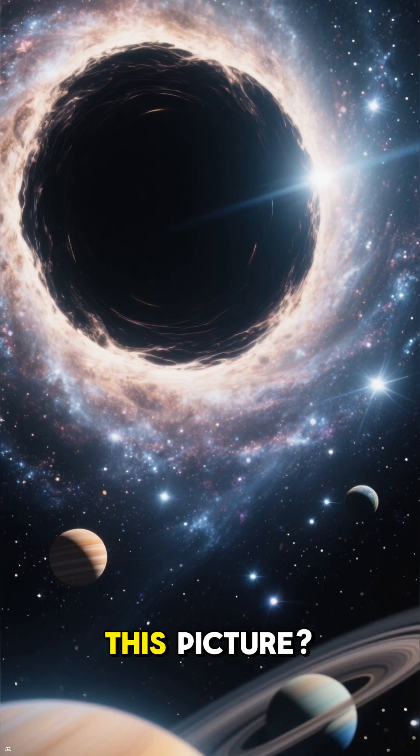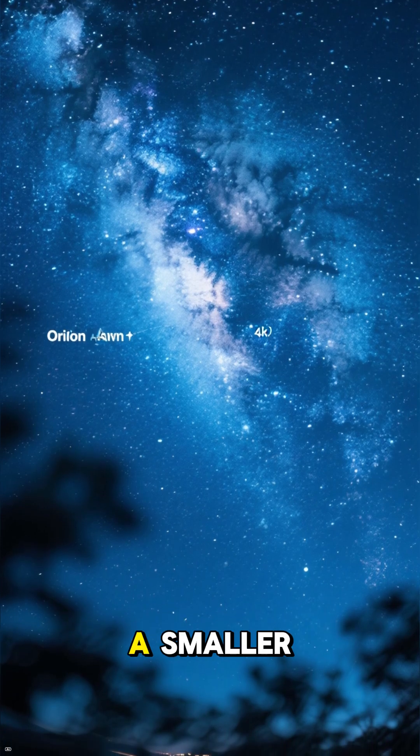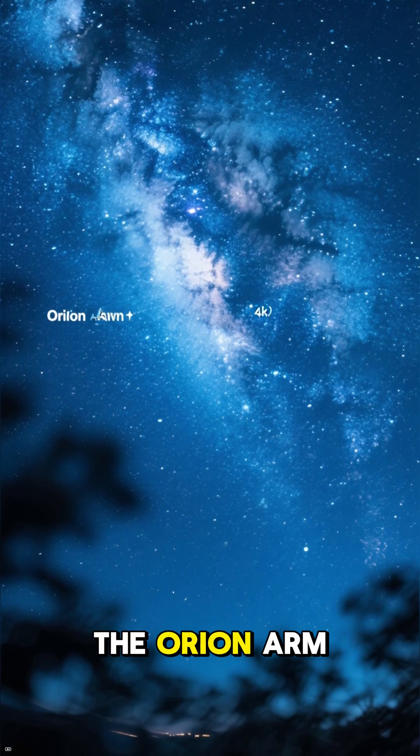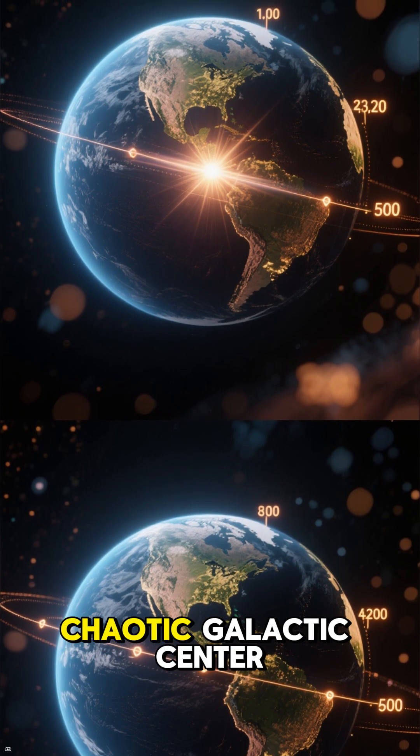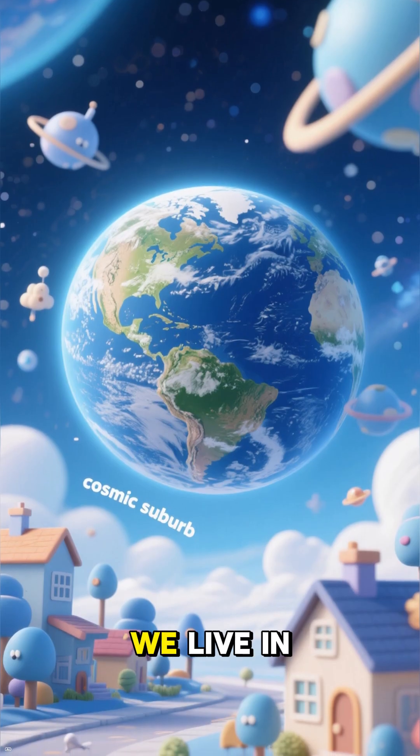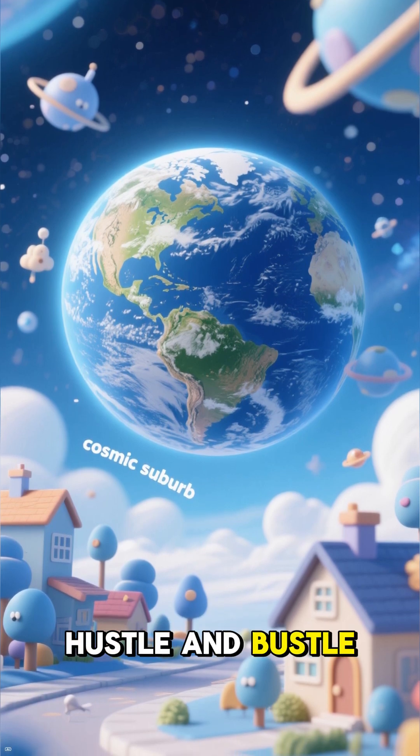So, where do we fit into this picture? Our solar system, including Earth, is located in a smaller spiral arm called the Orion Arm. We're about 27,000 light years away from that chaotic galactic center. You could say we live in a quiet, cosmic suburb, far from the hustle and bustle of downtown.